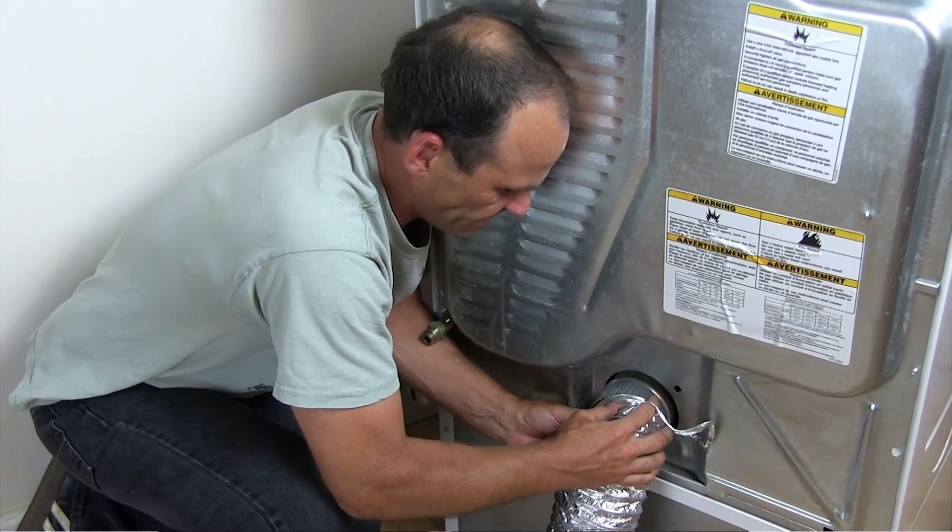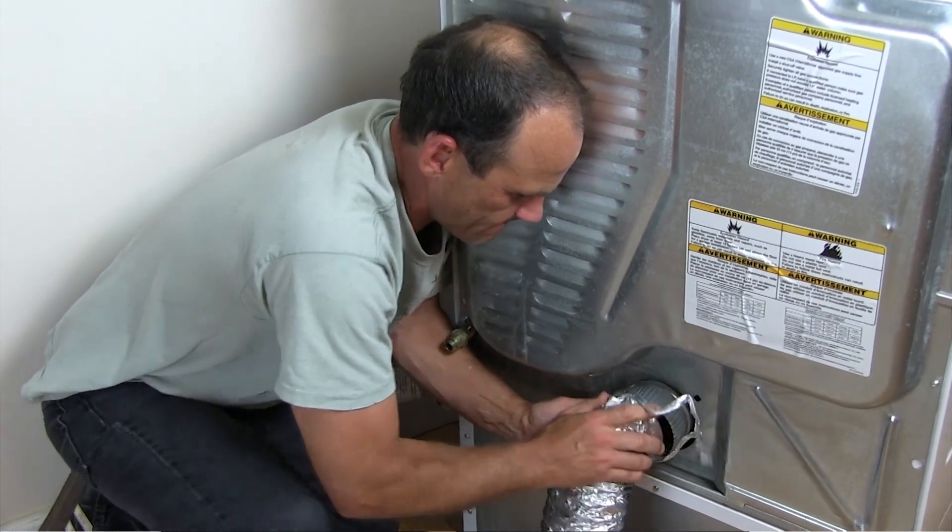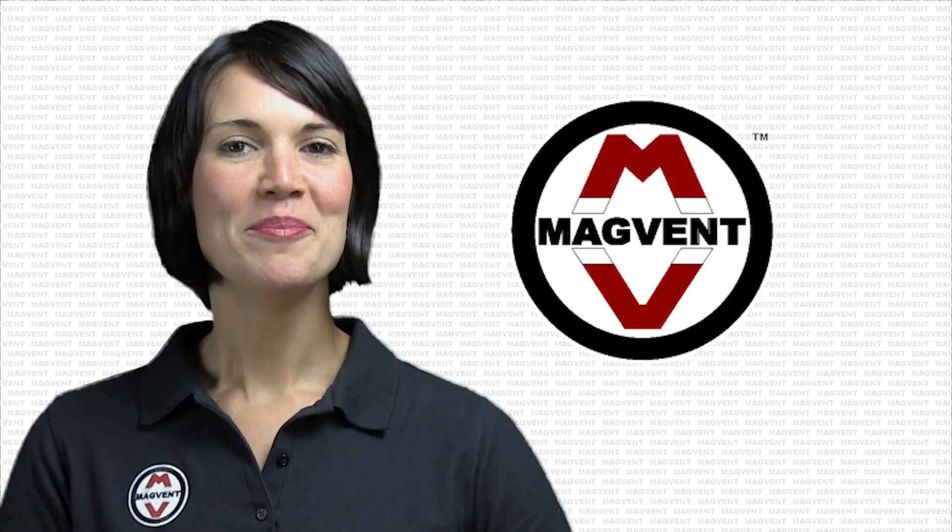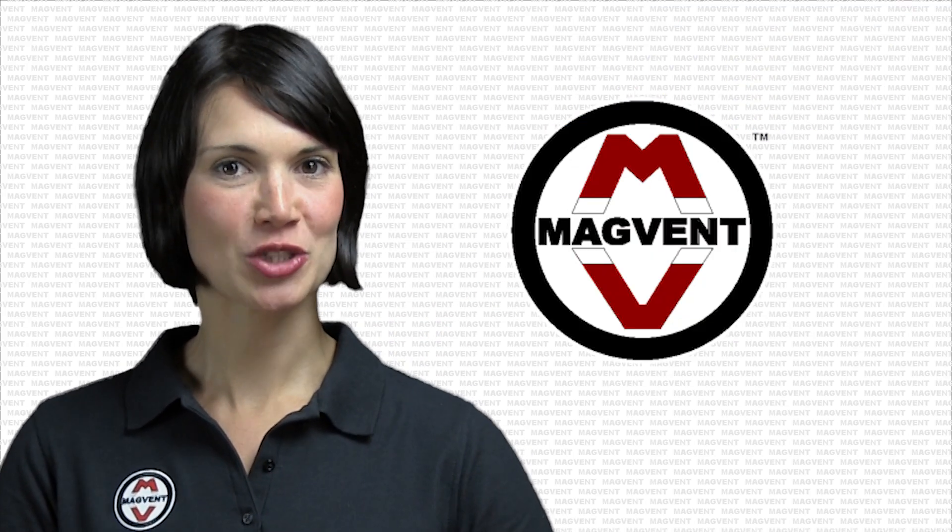When the dryer is slid into place, it creates a restricted, double-backed jumble of duct known as the dryer dragon. MagVent solves that transition duct restriction.